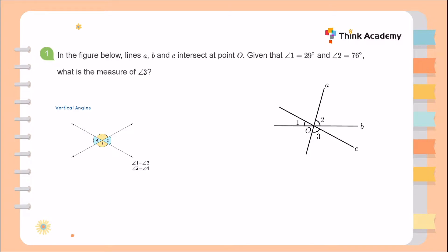I can see that angle 3 has a vertical angle, angle 4, and they are equal. Now I can see that angle 1 plus angle 4 plus angle 2 equals 180 degrees, as they are all on the same line, line B. Because angle 1 is 29 degrees and angle 2 is 76 degrees, I can calculate angle 4 as 180 minus 29 minus 76, which equals 75 degrees.